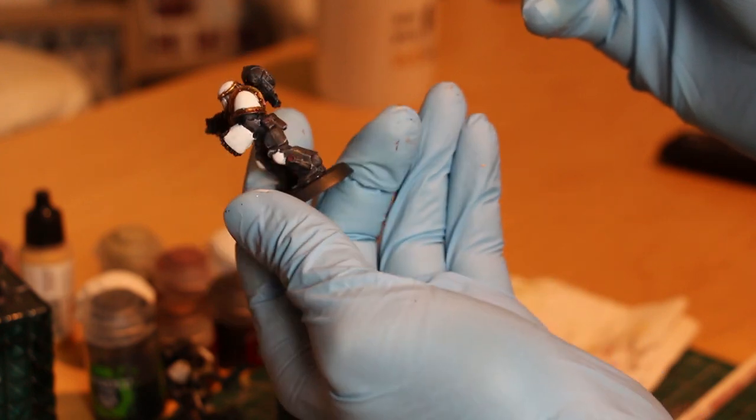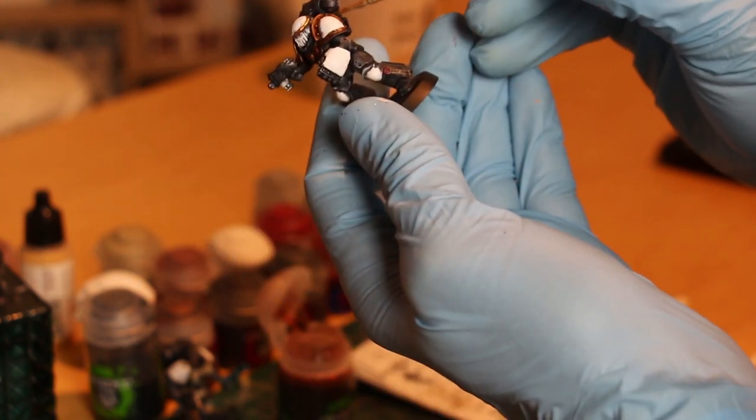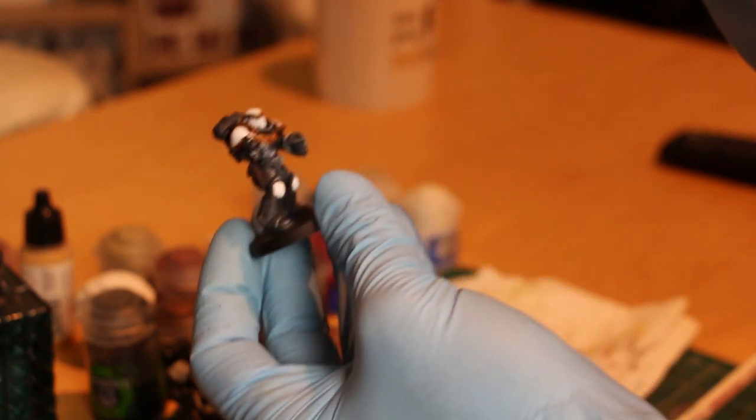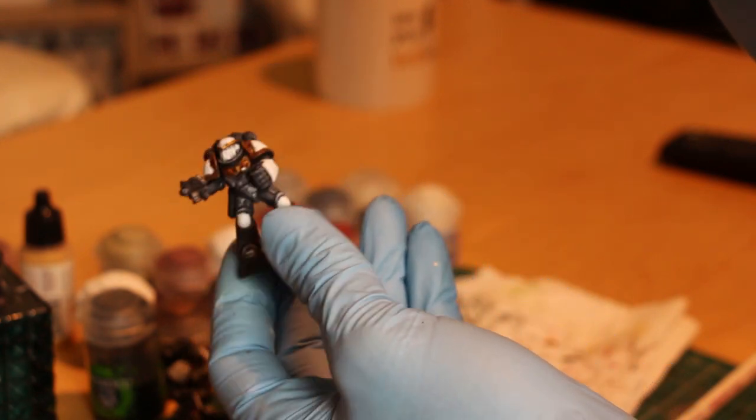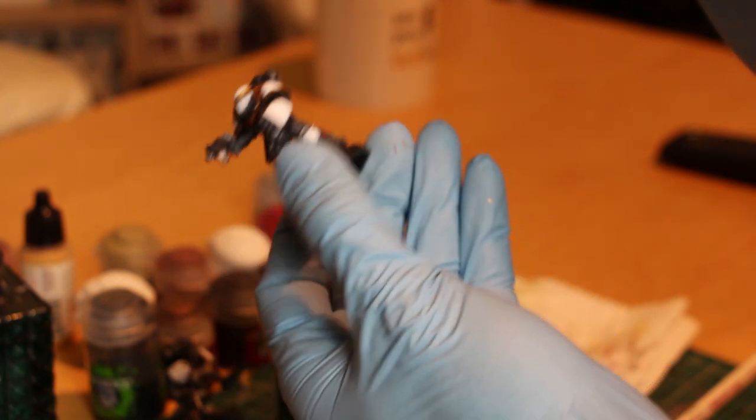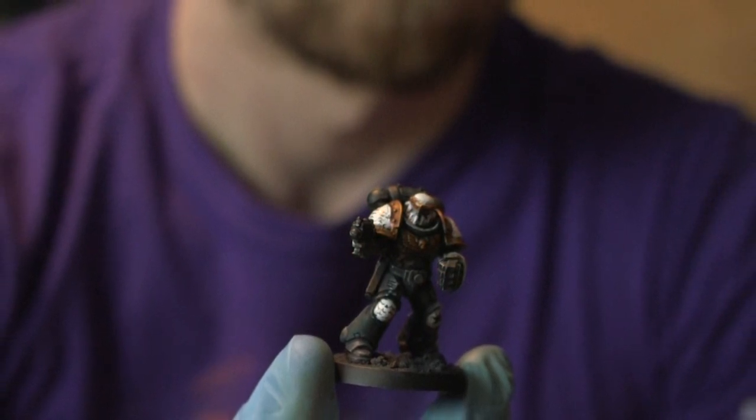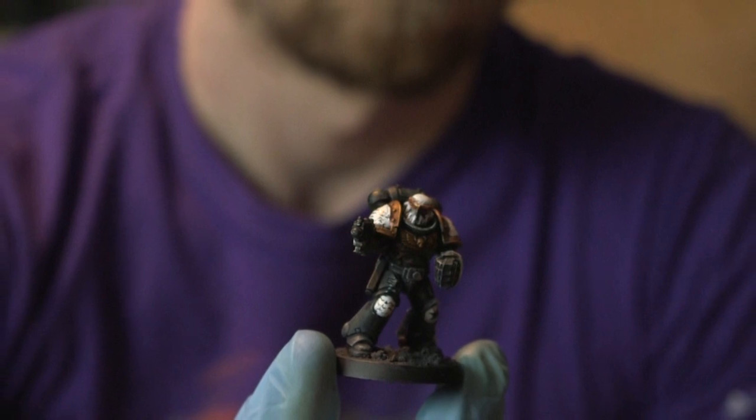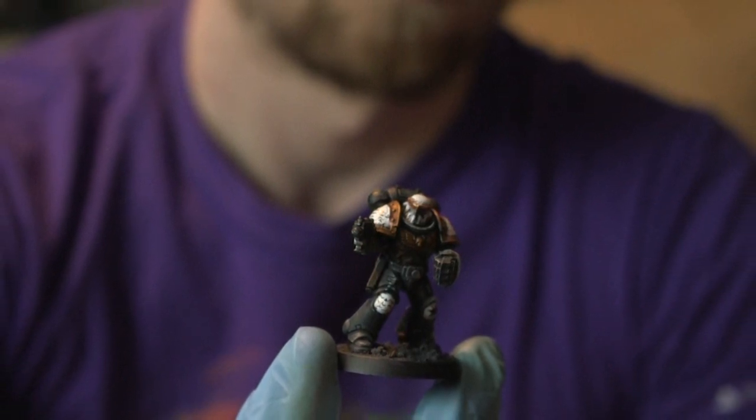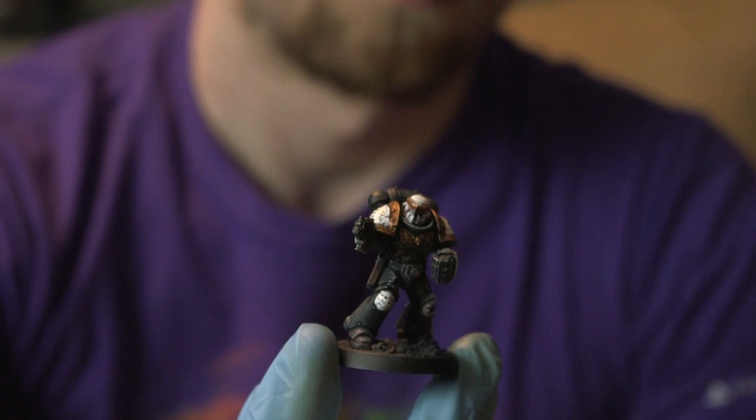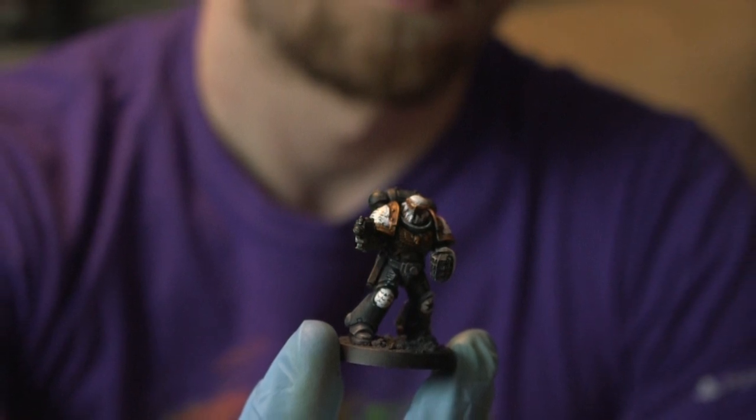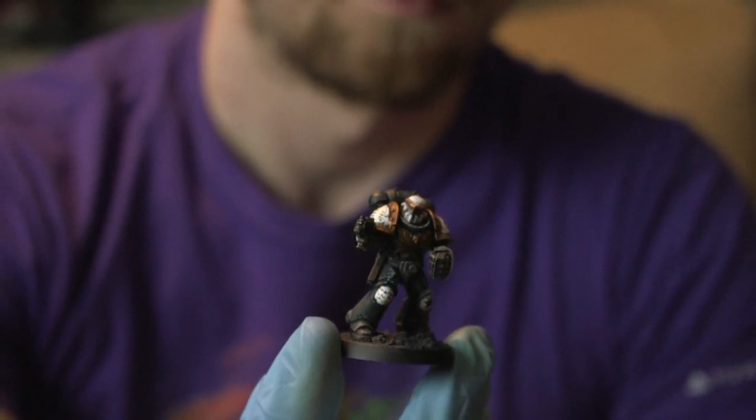Now I'm going to use Reikland Fleshshade which I completely missed the camera on, apologies. And I'm just going to go over my gold areas and really get it into the nooks and crannies, especially around the bolts of the shoulder pads and into the wings of the aquila just to give it some depth. From here my model's pretty much done. I touched up the eyes again with a bit more red. I just dry brushed over them like we discussed before. And I used a fine artist black pen to quickly add some scribbles like he's got some litanies and rites of holiness on his armor just to make him look a bit more fancy.